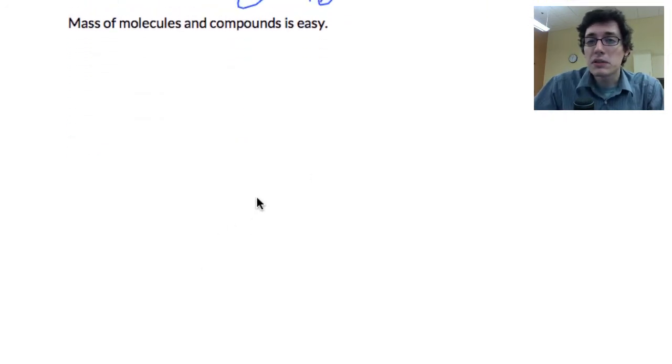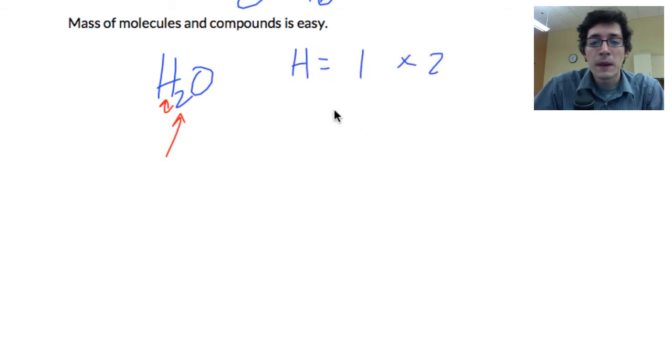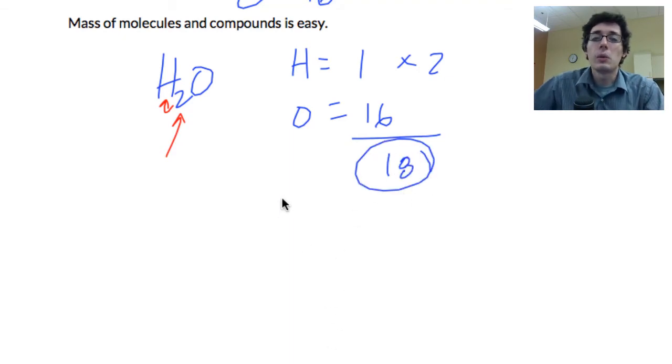The mass of molecules and compounds is easy. So let's start with an easy one. We've got H2O. You've all seen this. This is your common tap water. If we're reading a chemical formula, remember the subscript applies to the atom directly to its left. So we've got two hydrogens and one oxygen. What you do is you just take the mass of each of these. So hydrogen is one and I've got two of them. And oxygen, like we just looked at, was 16. So one times two is two plus 16, that gives me a mass of 18 for my water. So a water molecule weighs 18 atomic mass units.